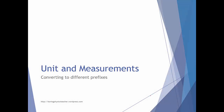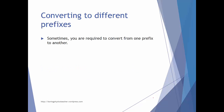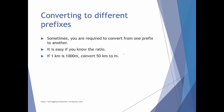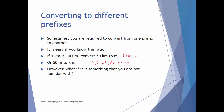In this lesson we are going to learn about converting between different prefixes. Sometimes you are required to convert from one prefix to another, and it is easy if you know the ratio. For example, if you know that one kilometer equals one thousand meters, converting 50 kilometers to meters is simply a matter of multiplying by one thousand, giving 50,000 meters. Or to convert 50 meters to kilometers, you divide by one thousand, moving three decimal places to get 0.05 kilometers.